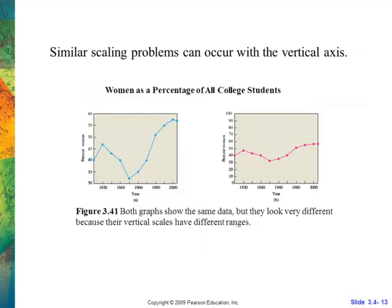If we change the scale on a line graph, notice that one graph shows only 30 to 60, while another shows 0 to 100. The change looks far more drastic in the zoomed-in version because we're looking at it under a microscope. The same value appears at the top of one graph and in the middle of another, even though the numbers are exactly the same. Always look to see where the graph begins — you should always start your graph at zero.